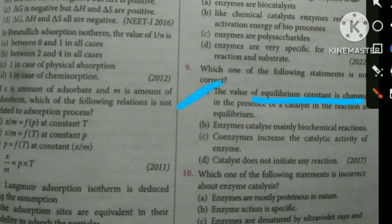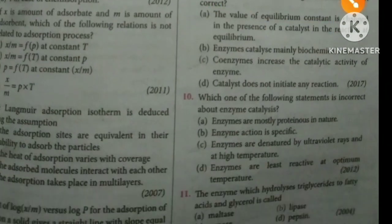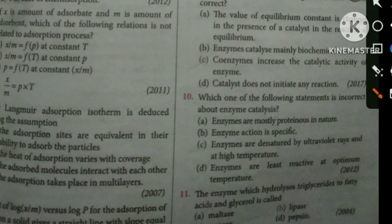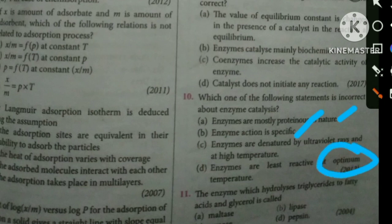Next question about enzyme catalyst characteristics: Enzymes are mostly proteins. They have action specificity. Enzymes are denatured by UV rays. Enzyme activity is highest at optimum temperature. Option B is the correct answer.